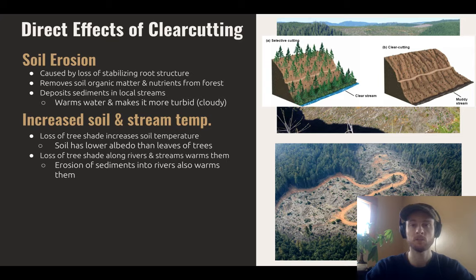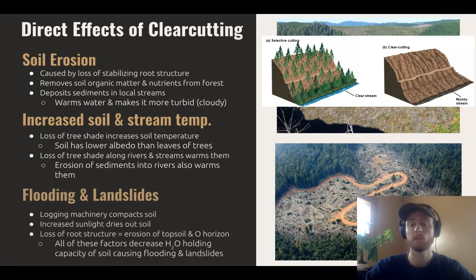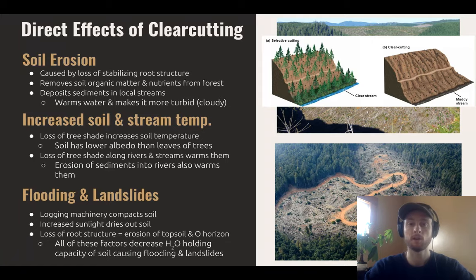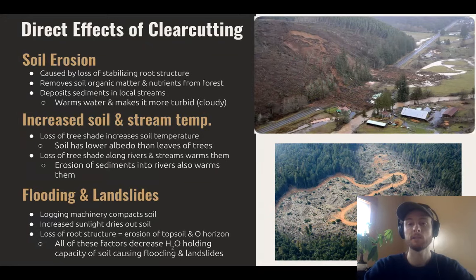Finally, we can experience flooding and landslides when a forest is clear cut. Without the stabilizing root structure in place, the soil is far more prone to erosion. Logging machinery also compacts the soil, and increased sunlight dries it out, decreasing the water-holding capacity of the soil. So when it does rain, the soil holds much less water, produces a lot more runoff, and that leads to landslides — as we can see in the picture at the top of the screen. It can also lead to flash floods because the excess rain can no longer be absorbed by the soil without the tree roots.